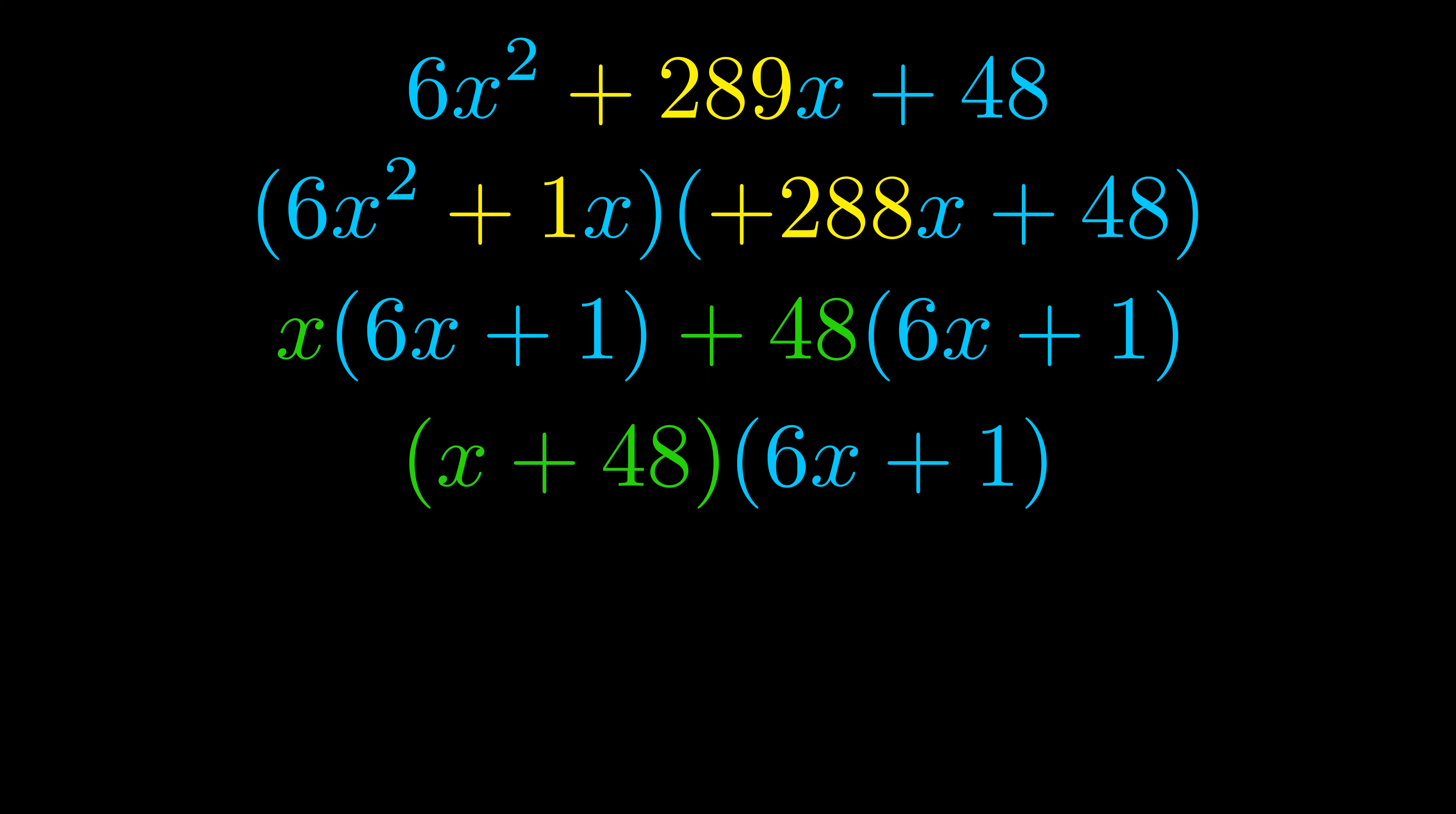Those blue values will become one of our factors, and we will combine the two green values, the GCFs that we pulled out, to get the other one. And that is our fully factored equation.